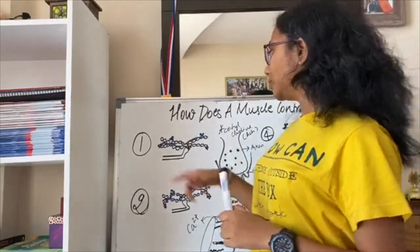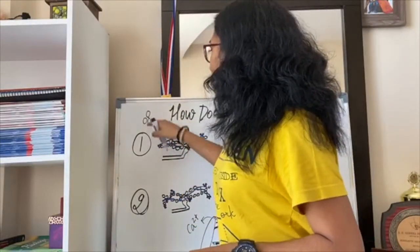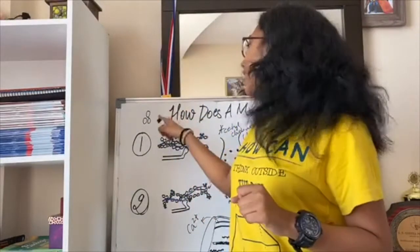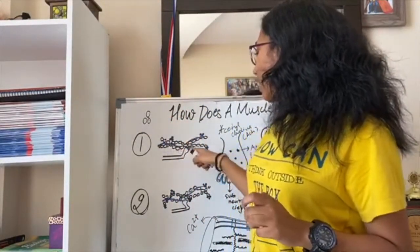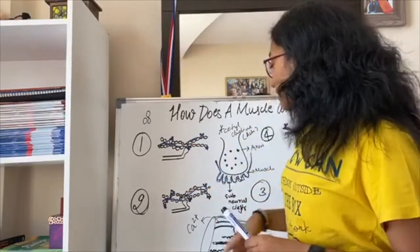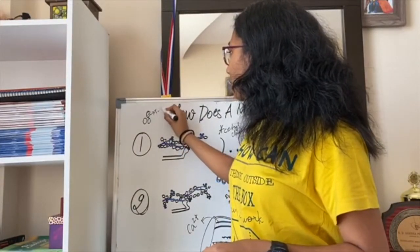So actin filament, I told you it has troponin. So troponin has three units. Troponin C for binding calcium, troponin I for inhibiting and troponin T that binds to the tropomyosin. So now this calcium ion which is released, it binds to the troponin C.